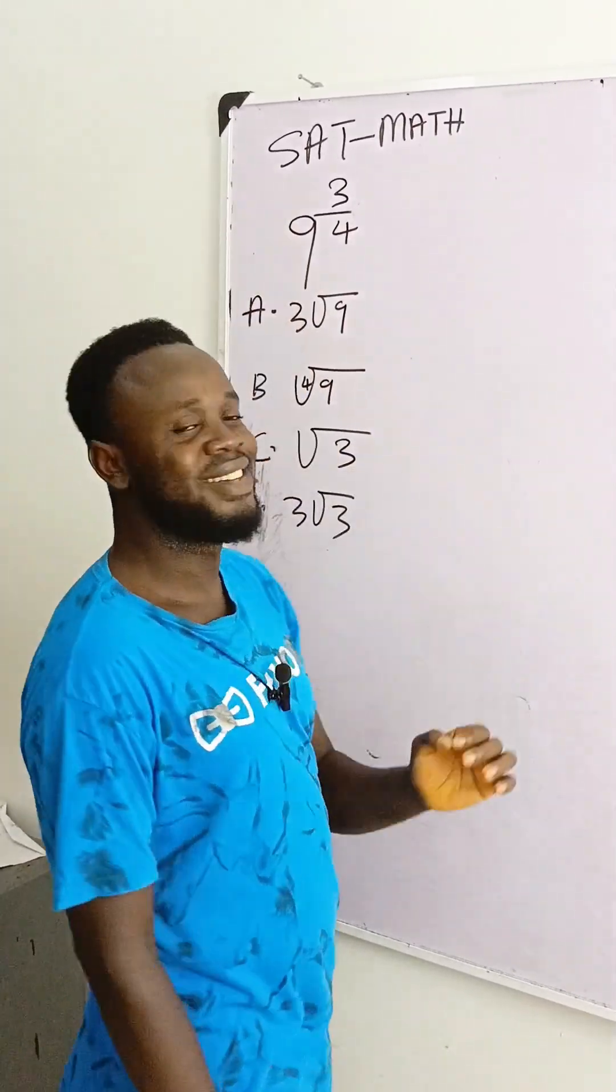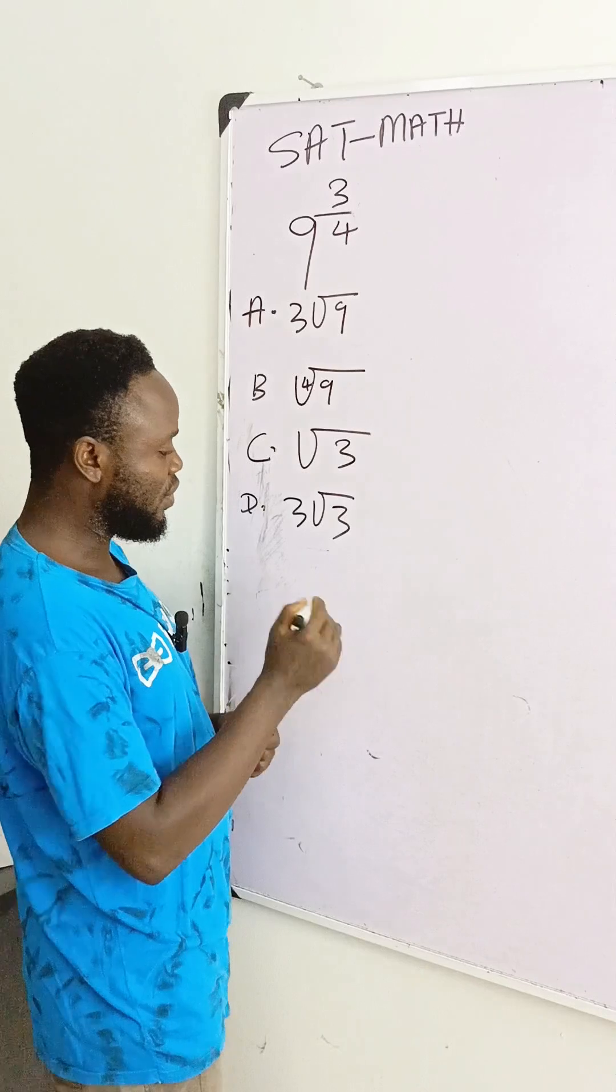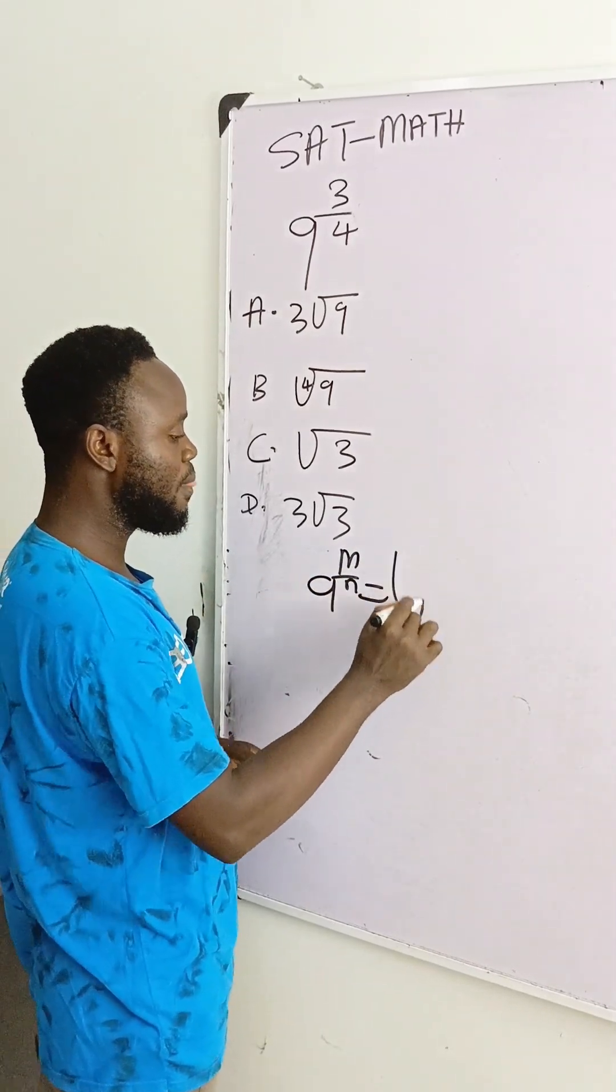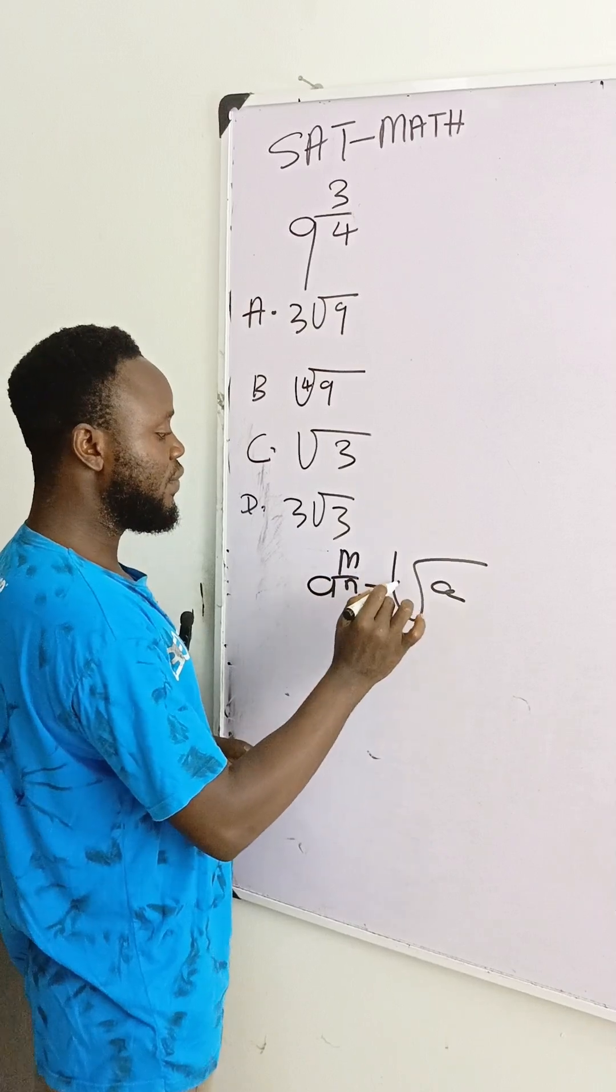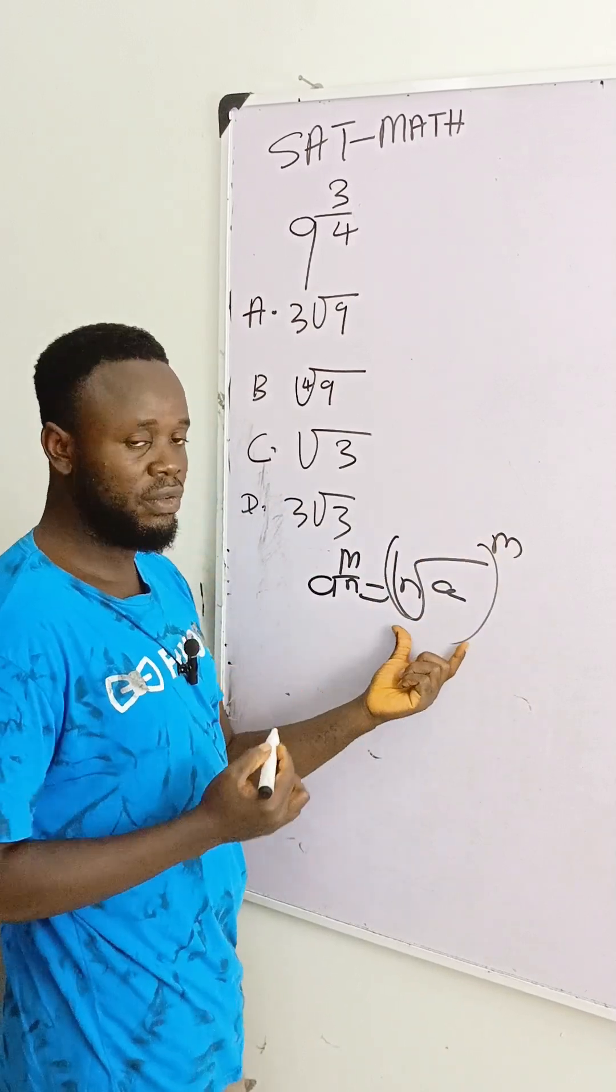When you see this type of equation, the nearest thing that can come to the mind of anybody is this law of indices. A raised to the power M over N equal to, you have A here, you have N here, then you have M. This is a law of indices.